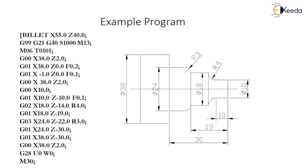M06 tool we have to select and I am just putting out the particular dimension. First I have to keep the origin here — that is X0, Z0 origin will be available here. And from this location we have to consider the dimension. So here you observe that when we are going to move G01, X38, Z0, F0.2 — that means it will go to X38 position.